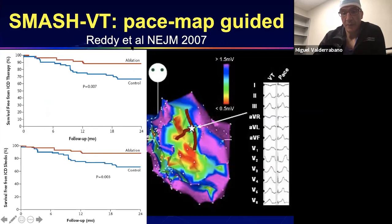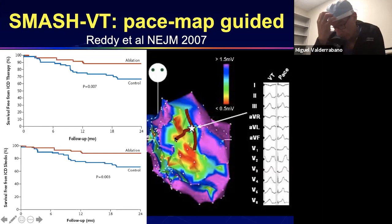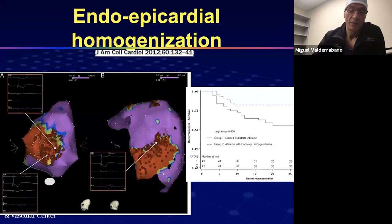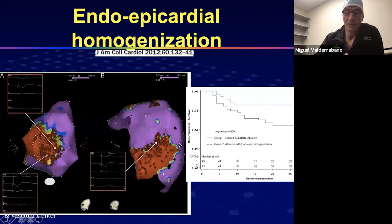More recently, more aggressive approaches have been proposed. Natale randomized patients to limited substrate ablation versus epicardial and endocardial homogenization — burning inside and outside the scar, sandwiching the myocardium with lesions from both surfaces — which led to better long-term results. If the scar is too large to ablate entirely, you may choose to pace map along the edges and only ablate spots that give a good pace map matching the tachycardia.